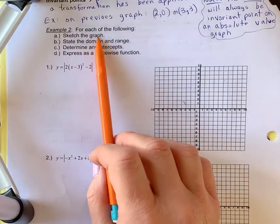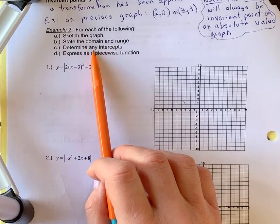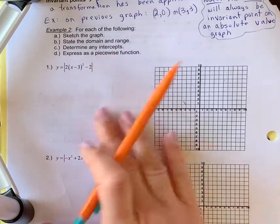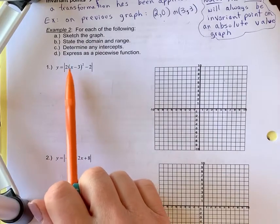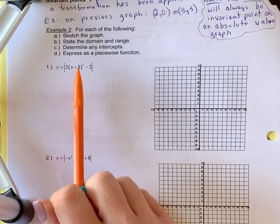Example 2, for each of the following, you're going to sketch the graph, state domain and range, determine intercepts, and write it as a piecewise function. So again, you want to use a pencil because we're going to graph inside the brackets first.